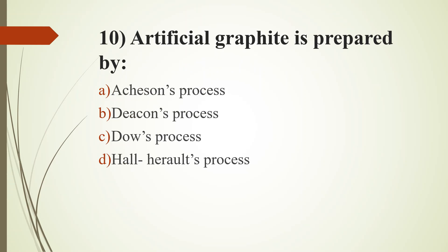Tenth question. Artificial graphite is prepared by: Option A, Acheson process; Option B, Deacon's process; Option C, Dow's process; Option D, Hall-Héroult's process. Answer is Option A, Acheson process. The Acheson process is an industrial process for the manufacture of graphite by heating coke mixed with clay. Deacon's process is preparation of chlorine gas. Dow's process is preparation of phenol. Hall-Héroult's process is the extraction of aluminum from its ore (bauxite).